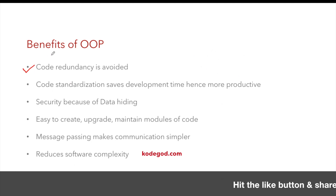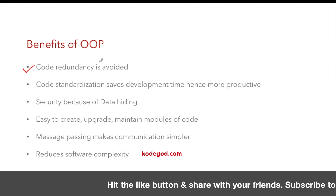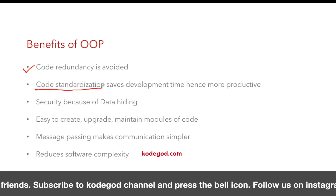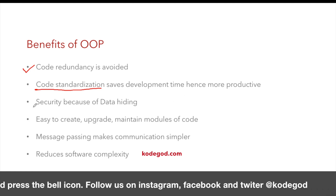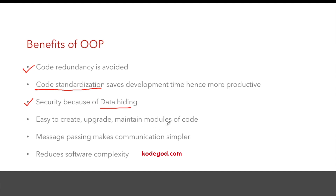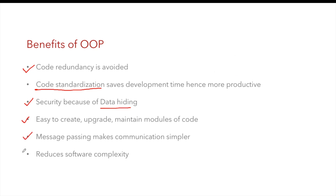Because of these features, OOP provides several benefits: code redundancy is avoided, there is less redundancy due to code standardization, development time is saved making development more productive, data hiding provides good security, modules are easy to create and maintain, message passing makes communication simple, and overall software complexity is reduced through features like inheritance and polymorphism.